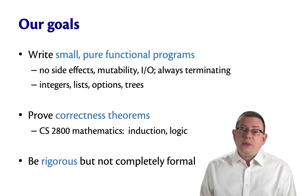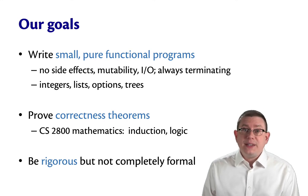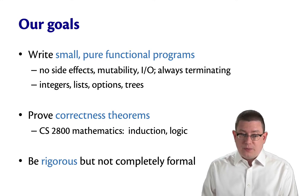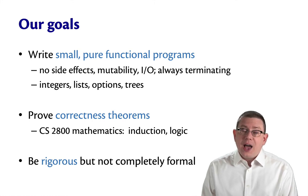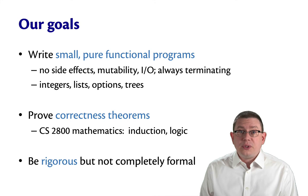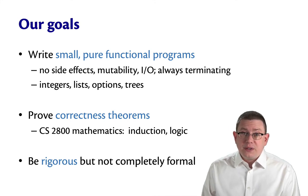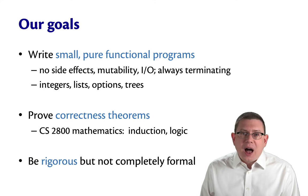We're going to do proofs about programs that involve integers, lists, options, trees, and a couple other data structures as well. We will be proving correctness theorems about these programs — this goes back to what you have learned or are learning in CS 2800. You will need to know some logic for this, and you will definitely get some more practice with induction. Our goal is not to be 100% completely formal — we're going to be rigorous and careful about the claims we make and the proof techniques we use, but we're not going to attempt to dot every I and cross every T.